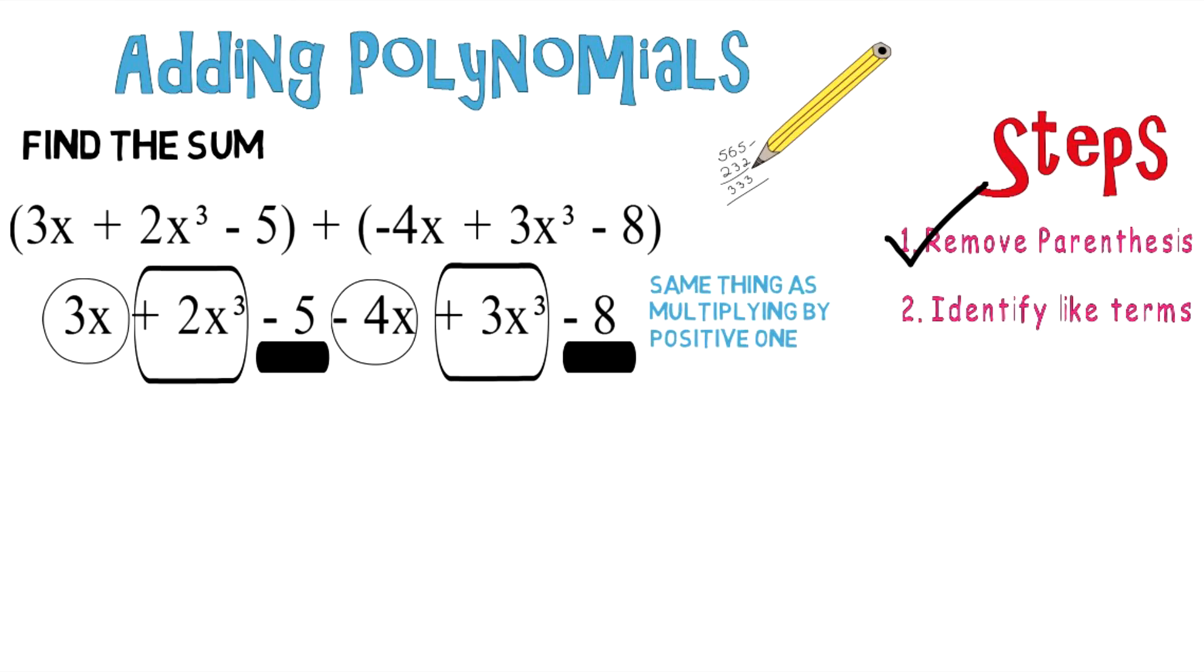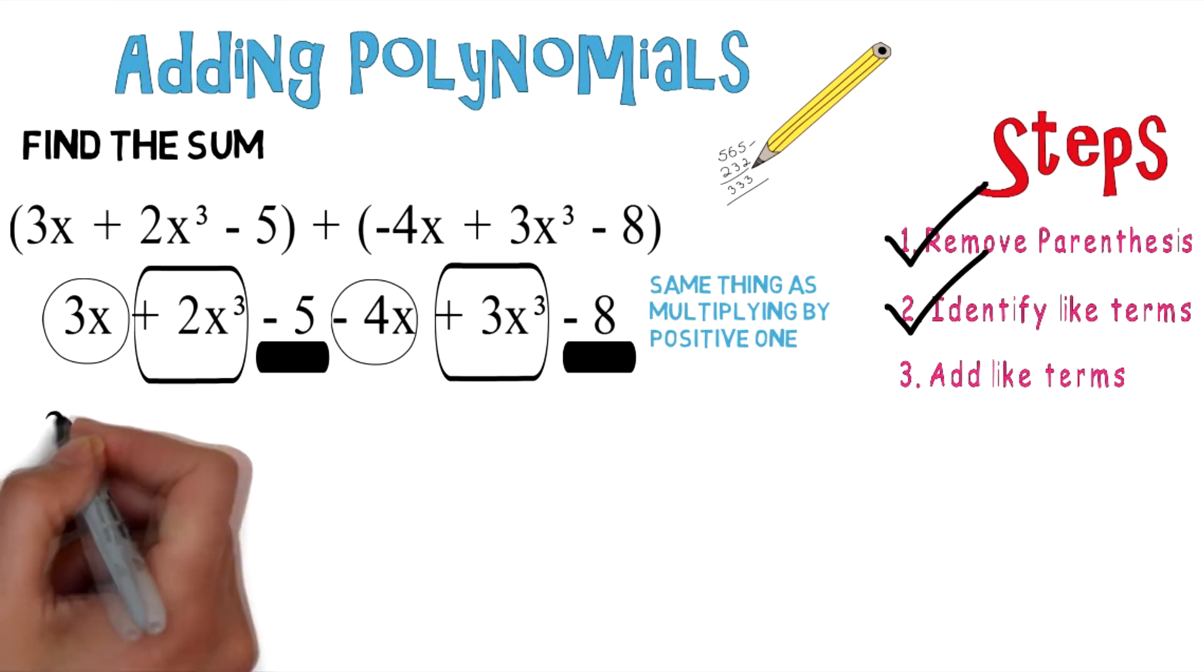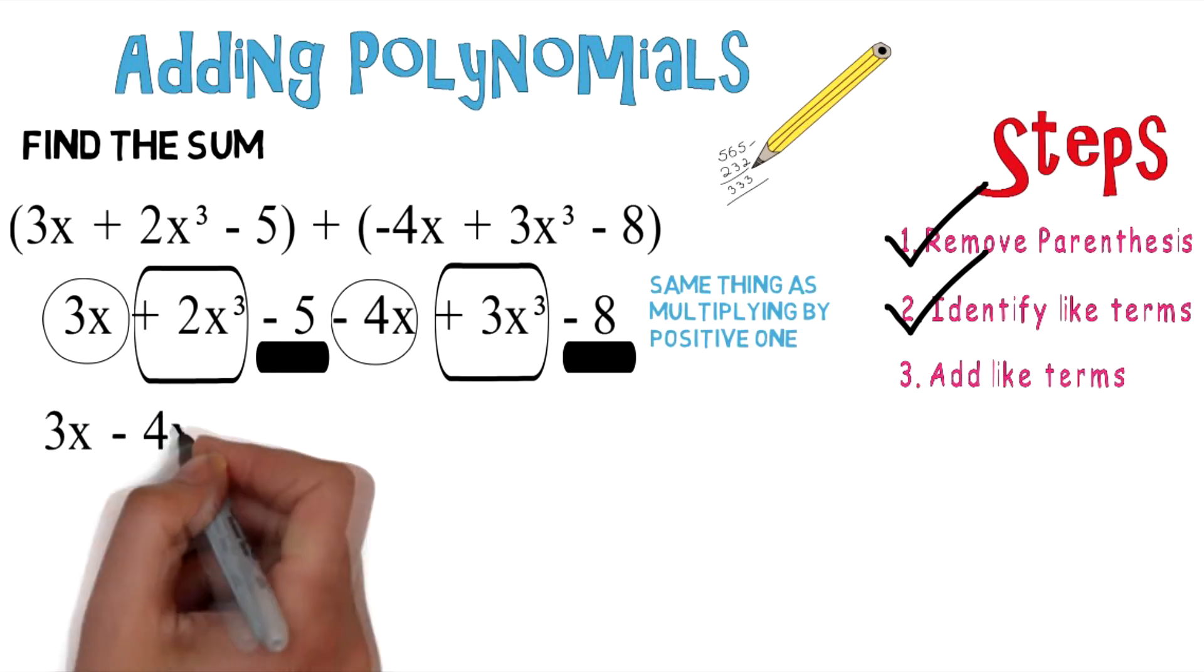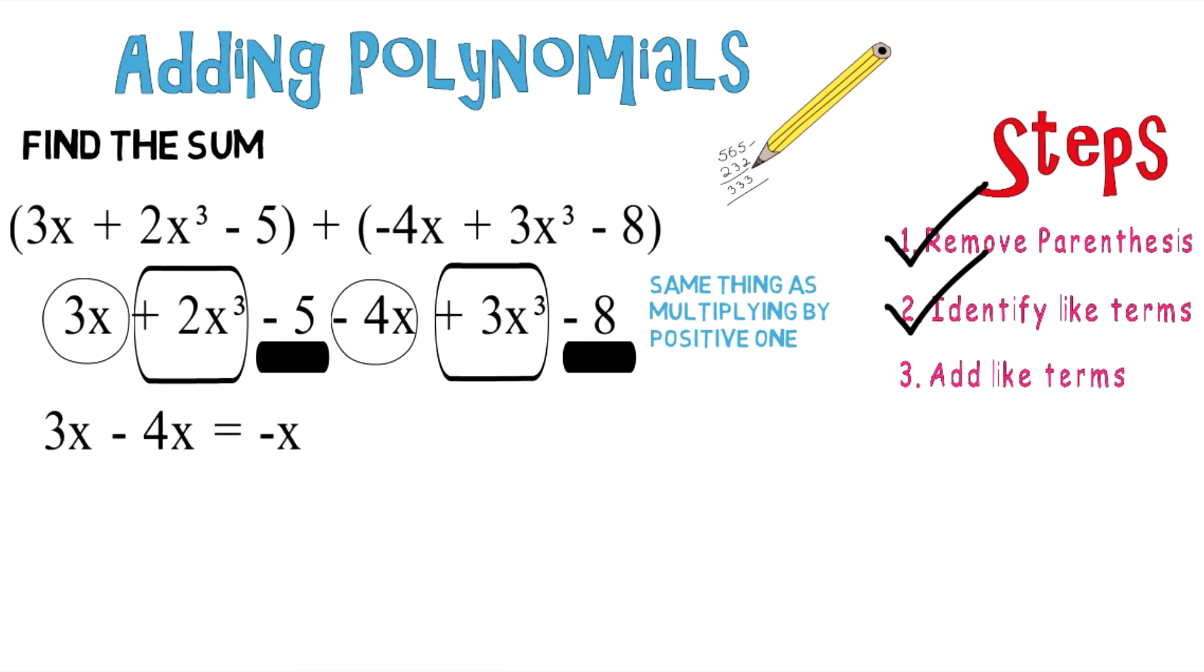So we can check off the next step as we identify those like terms. Let's move on to number 3, which is to add like terms. So let's do that. 3x minus 4x is actually going to give us a negative x, and you're able to add those because they're the same variable and power.